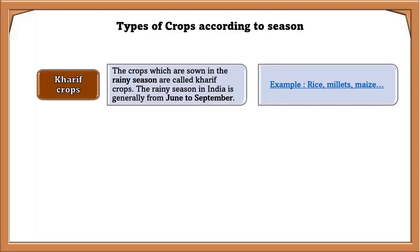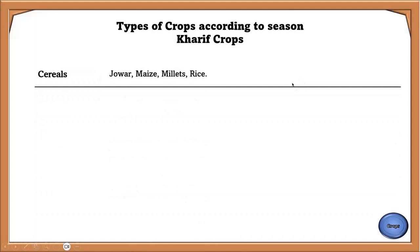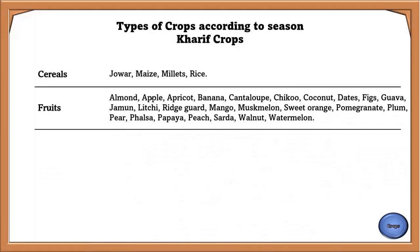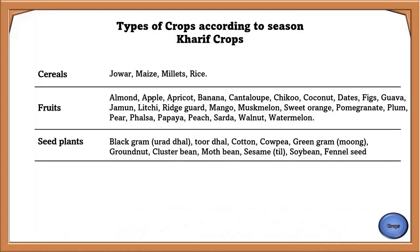Examples of Kharif cereals include jowar, maize, and millets. Kharif fruits include almond, apple, apricot, banana, coconut, dates, fig, jamun, litchi, mango, muskmelon, sweet orange, pomegranate, plum, pear, papaya, peach, walnut, and watermelon. Kharif seed plants include black gram, urad dal, toor dal, cotton, cowpea, green gram, groundnut, cluster bean, moth bean, sesame/till, soybean, and fennel seeds.